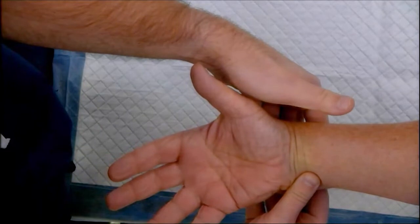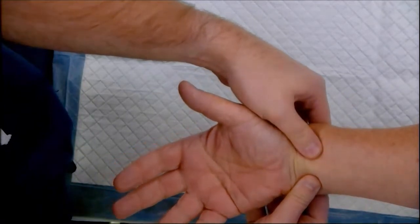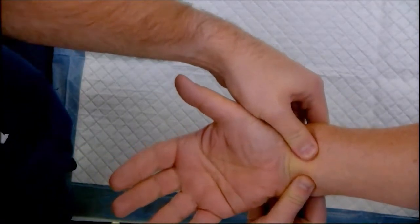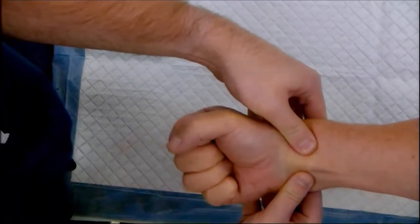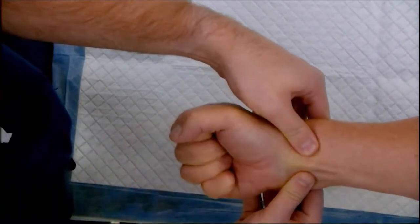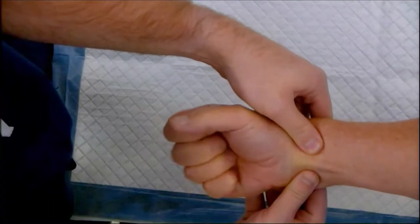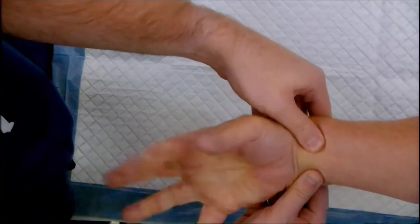We turn our attention to the ulnar artery. Once again, we locate the radial and ulnar artery and occlude both vessels. Have the patient clench and unclench their hands. The hand should appear blanched at this time.